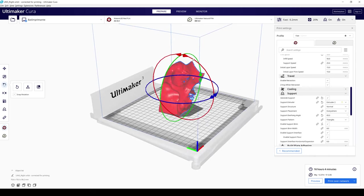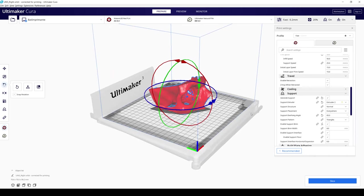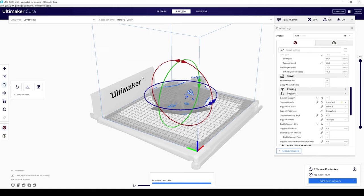The model is first opened in our slicer program. It's the program that prepares the model for printing. Then we're going to orient the model and have the program automatically generate the supports for printing.